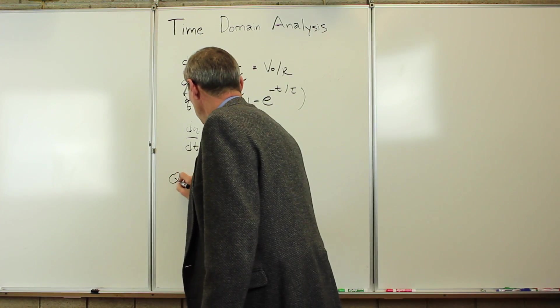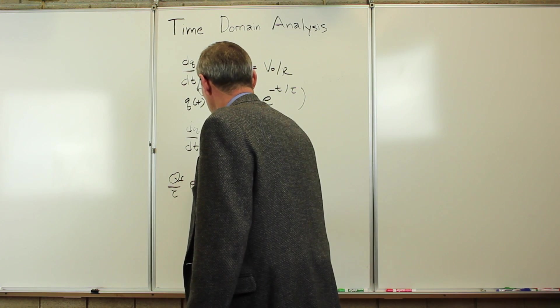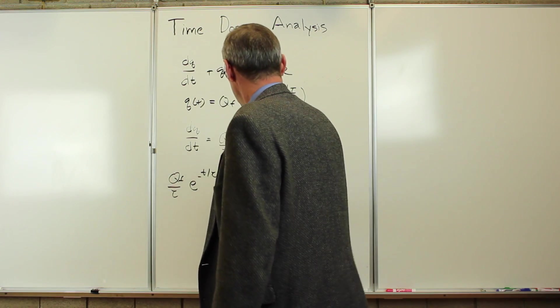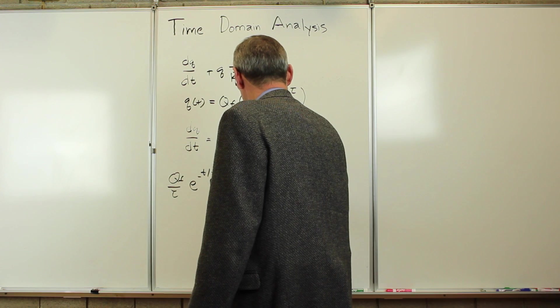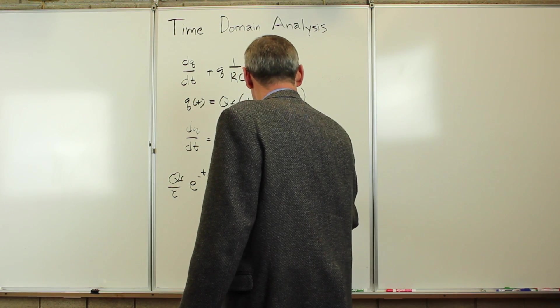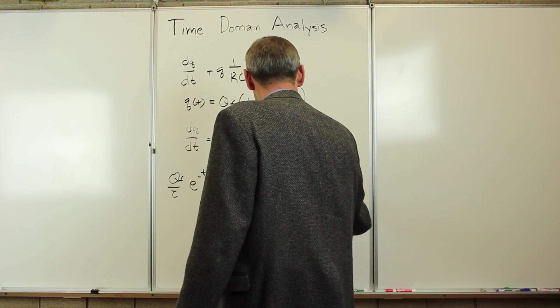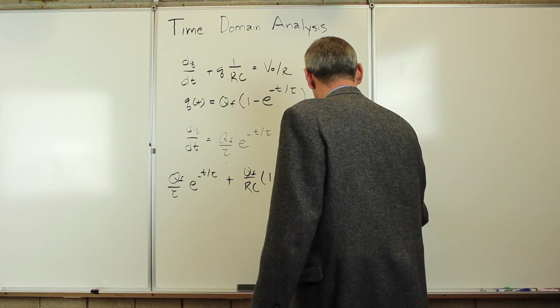We'll get Q_final over tau, e to the minus t over tau, that's here, plus Q_final over RC, 1 minus e to the minus t over tau, has to be equal to V0 over R. Now that looks pretty ugly there.